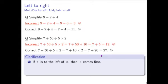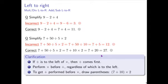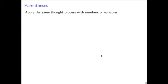So just to clarify: if division is to the left of multiplication, then division comes first. Perform multiplication before addition, regardless of which is to the left. To get addition performed before multiplication, you need to use parentheses. For instance, 7 plus 10 in parentheses times 2 — that will make the addition happen first.